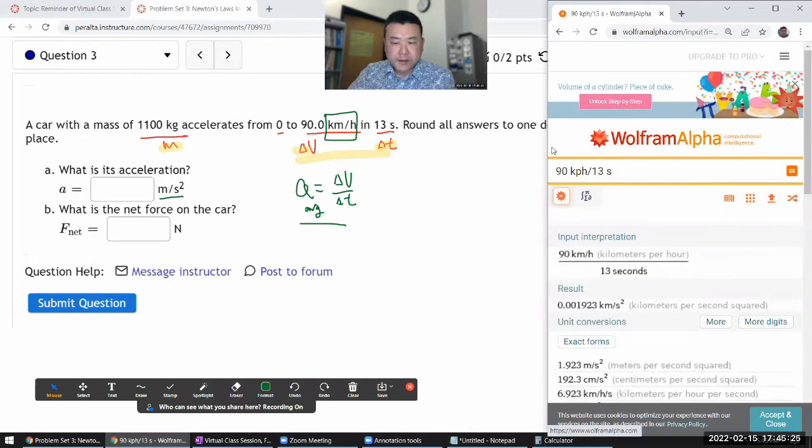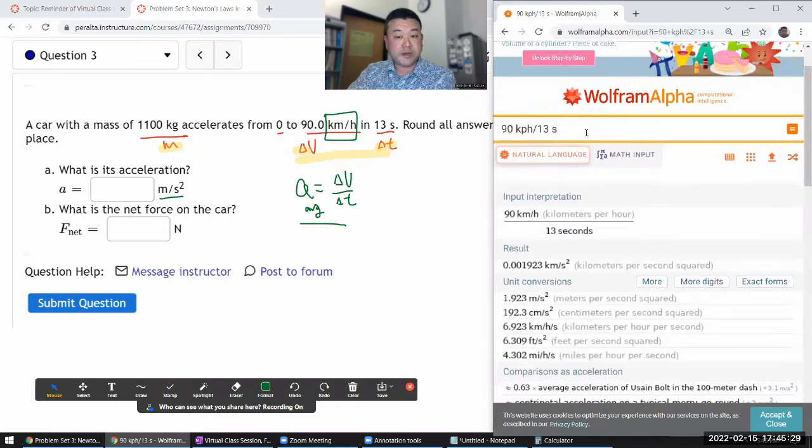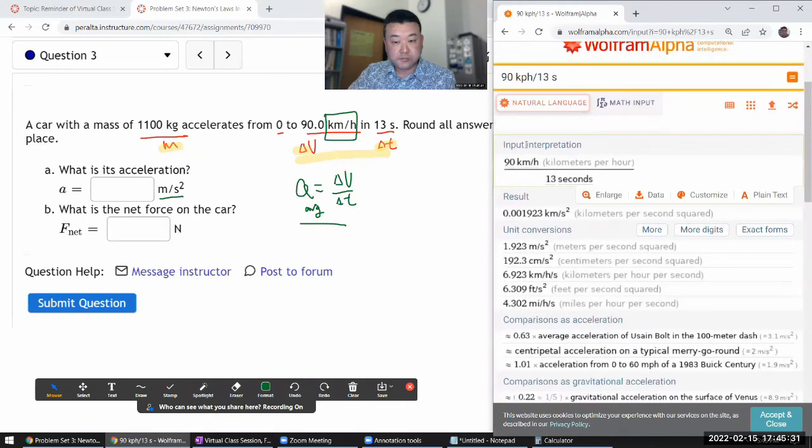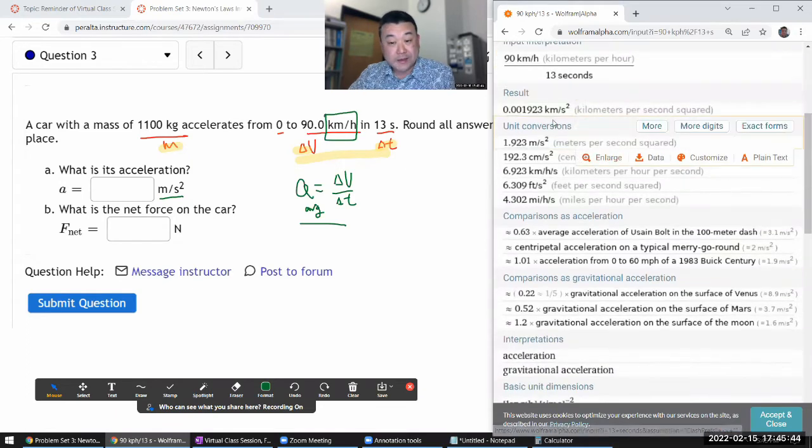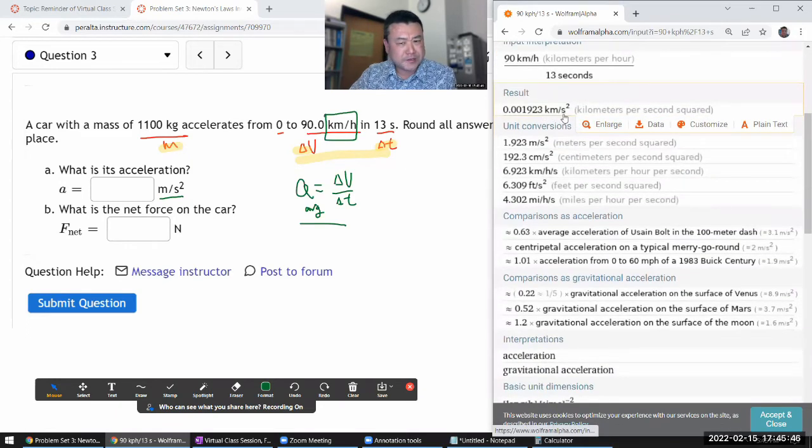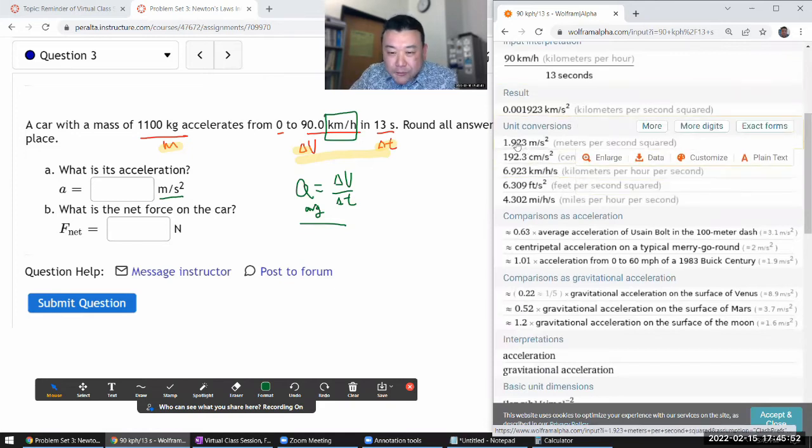And Wolfram Alpha has a bit of natural language processing that will try to interpret what I said. So look at the input interpretation, make sure it understood you correctly. You might have understood kph as something else, who knows. Okay, 90 kilometers per hour, good. 13 seconds, good. And it gives me some answers in kilometers per second squared, or kilometers per hour per second. The answer I want is either this 1.923 meter per